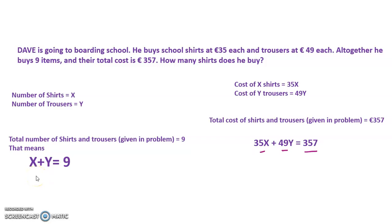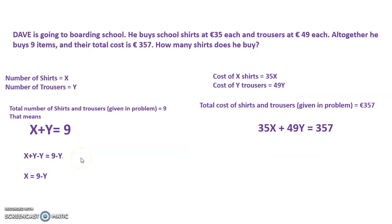We now have two equations: x plus y is equal to 9, and 35x plus 49y is equal to 357. We need to find x and y using these two equations. Starting with the simpler equation, x plus y equals 9, I subtract y from both sides: x plus y minus y equals 9 minus y, leaving x is equal to 9 minus y.